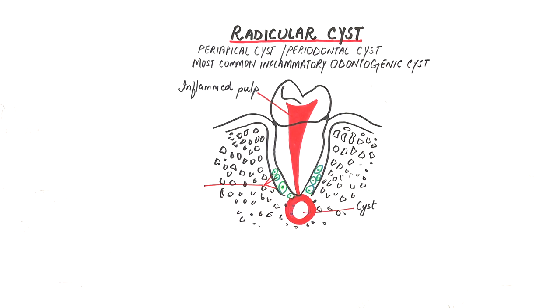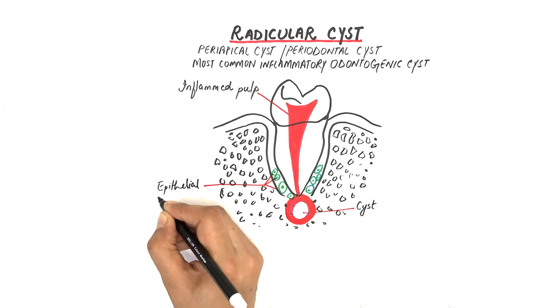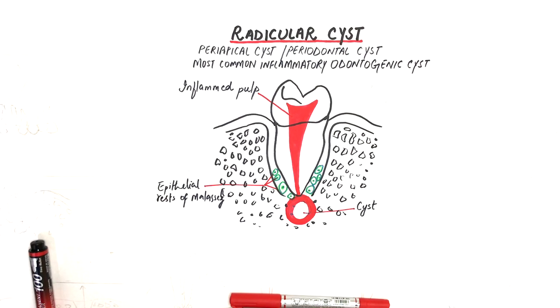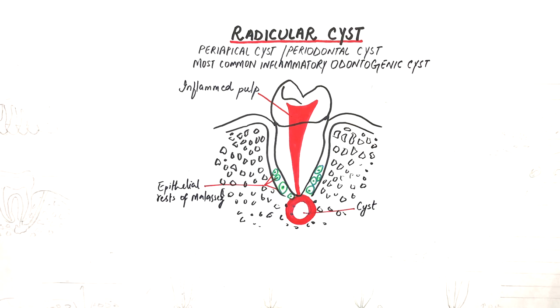These stimulated cells leading to the origination of the cyst are the epithelial rests of Malassez. The epithelial rests of Malassez are the remnants of Hertwig's epithelial root sheath which are left after the root of a tooth is completely formed.